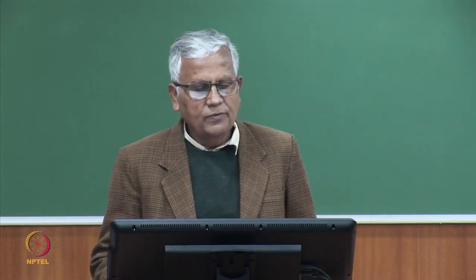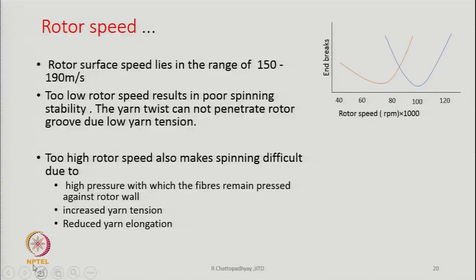Rotor surface speed typically lies in the range of 150 to 190 meters per second. Too low a rotor speed results in poor spinning stability because the yarn twist cannot penetrate the rotor groove due to low yarn tension. Too high a rotor speed also makes spinning difficult due to the high pressure with which fibers are pressed against the rotor wall, increased yarn tension, reduced yarn elongation, lengthening of the PTE causing more wrapper fiber formation, which weakens the yarn and causes breakage.